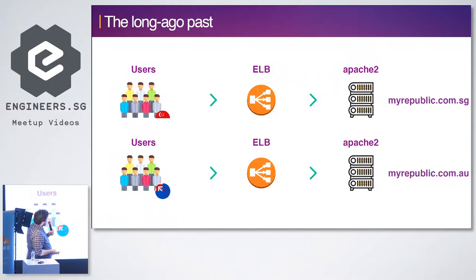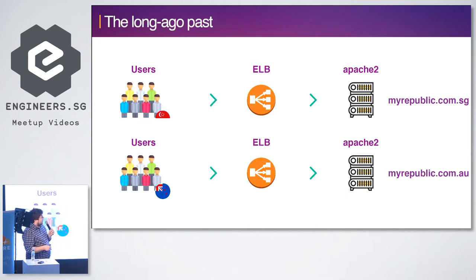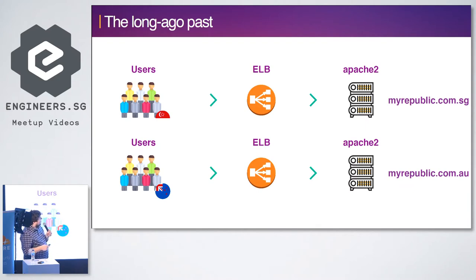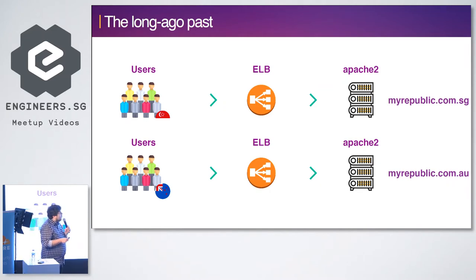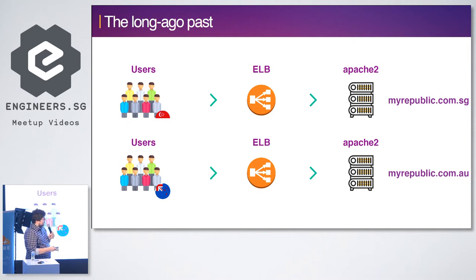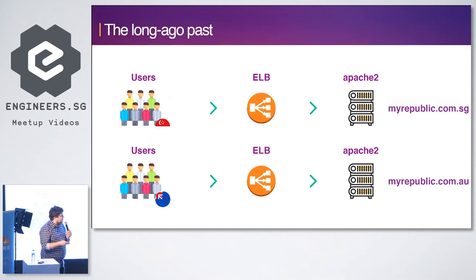In the past, we actually had local domains — for example in Singapore, we had mypublic.com.sg, and for simplicity I've just included Australia: mypublic.com.au. So we had our user base per country, then we had cloud-based infrastructure, local origins in AWS, and our origins which were Apache 2 web instances. So pretty simple with country-based domains.